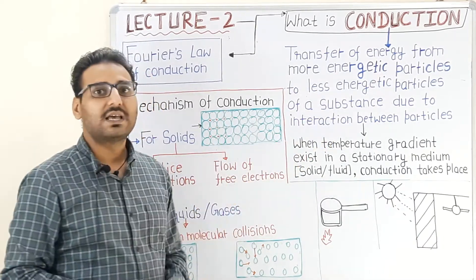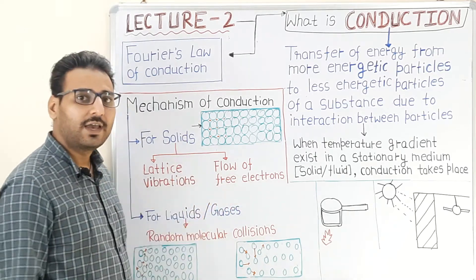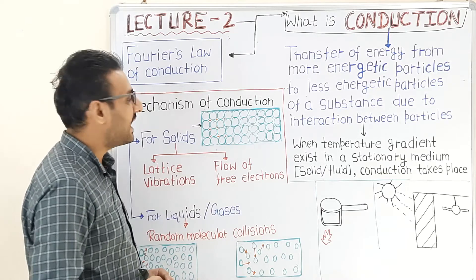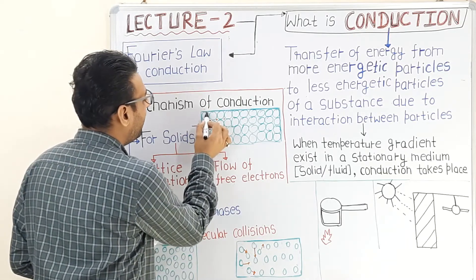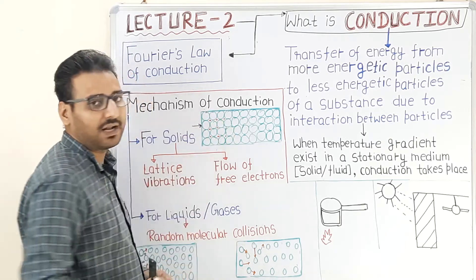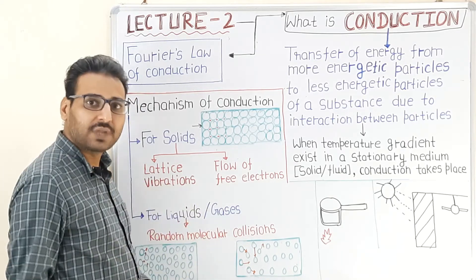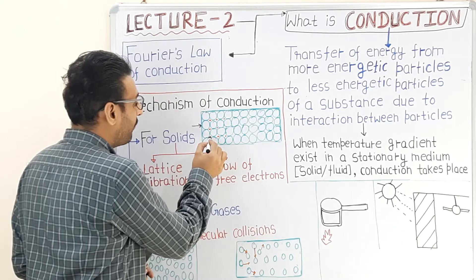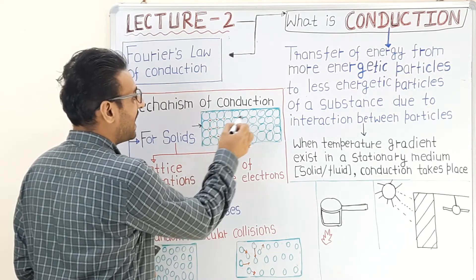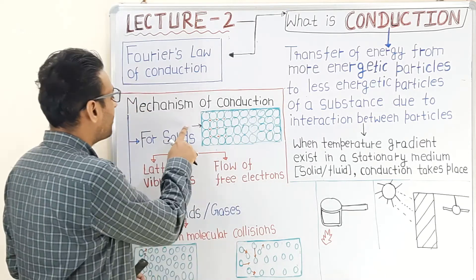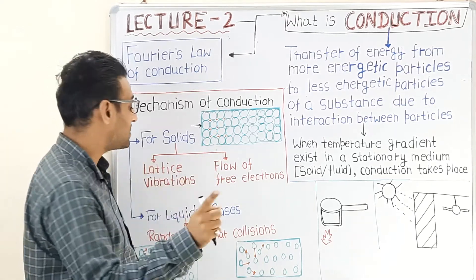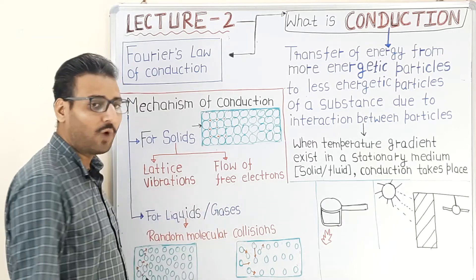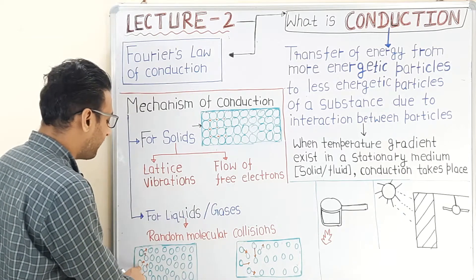The energy transfer from more energetic particles to less energetic particles occurs through the following mechanisms of heat conduction. In solids, the more energetic particles vibrate and transfer energy to neighboring particles — this is lattice vibration. The second mechanism is the flow of free electrons, which move through the intermolecular space and carry energy to the other end. So in solids, heat is conducted by lattice vibration and flow of free electrons.